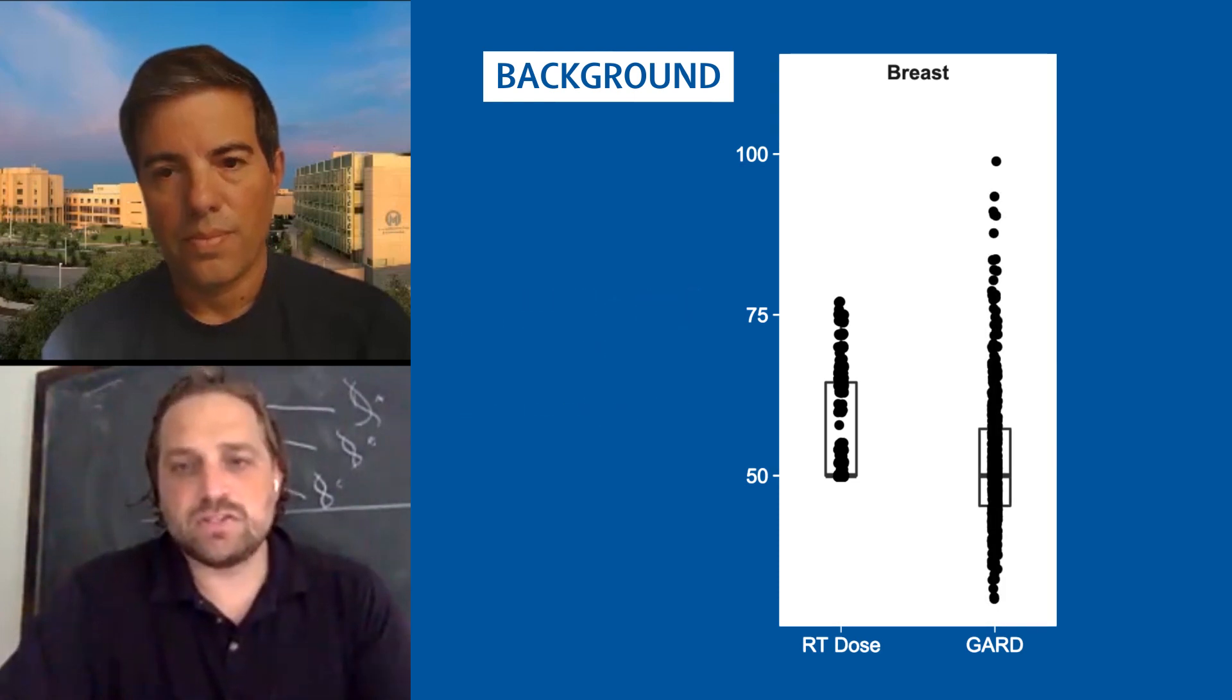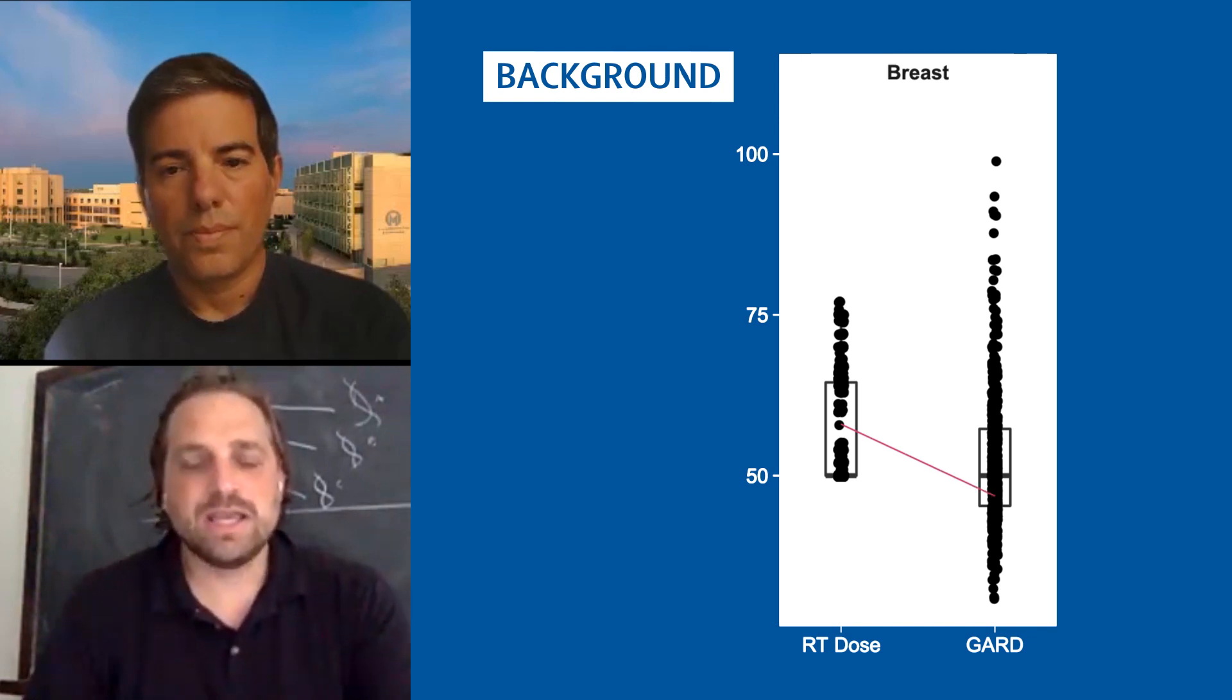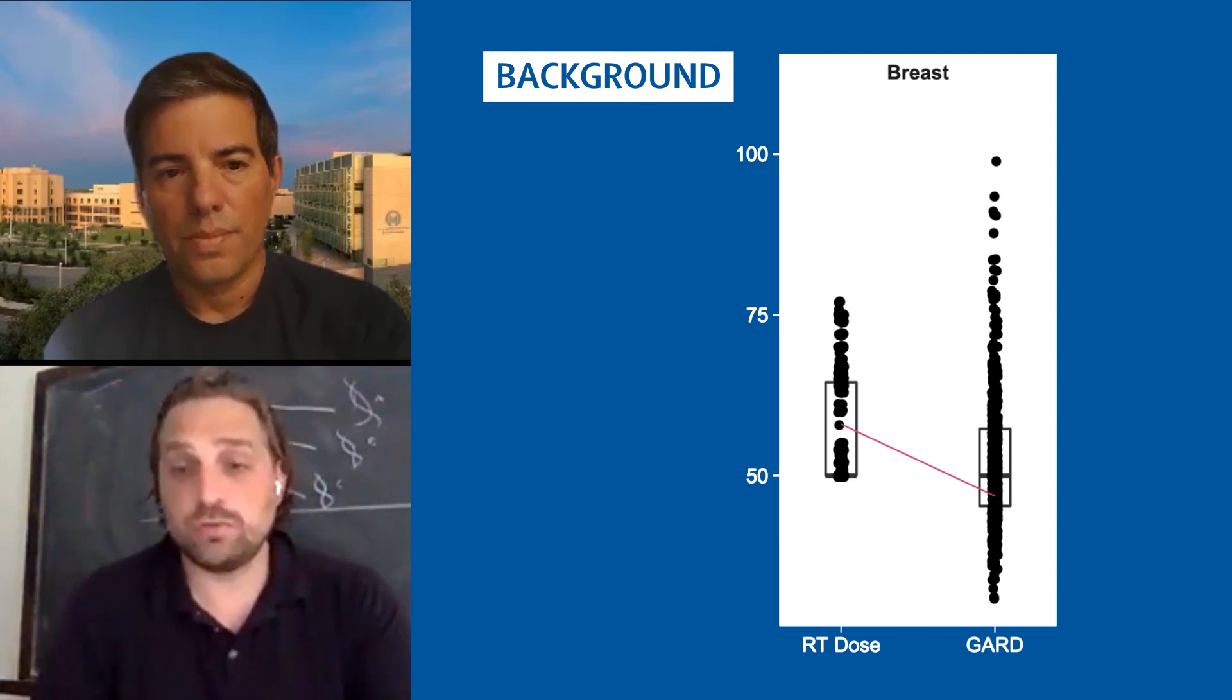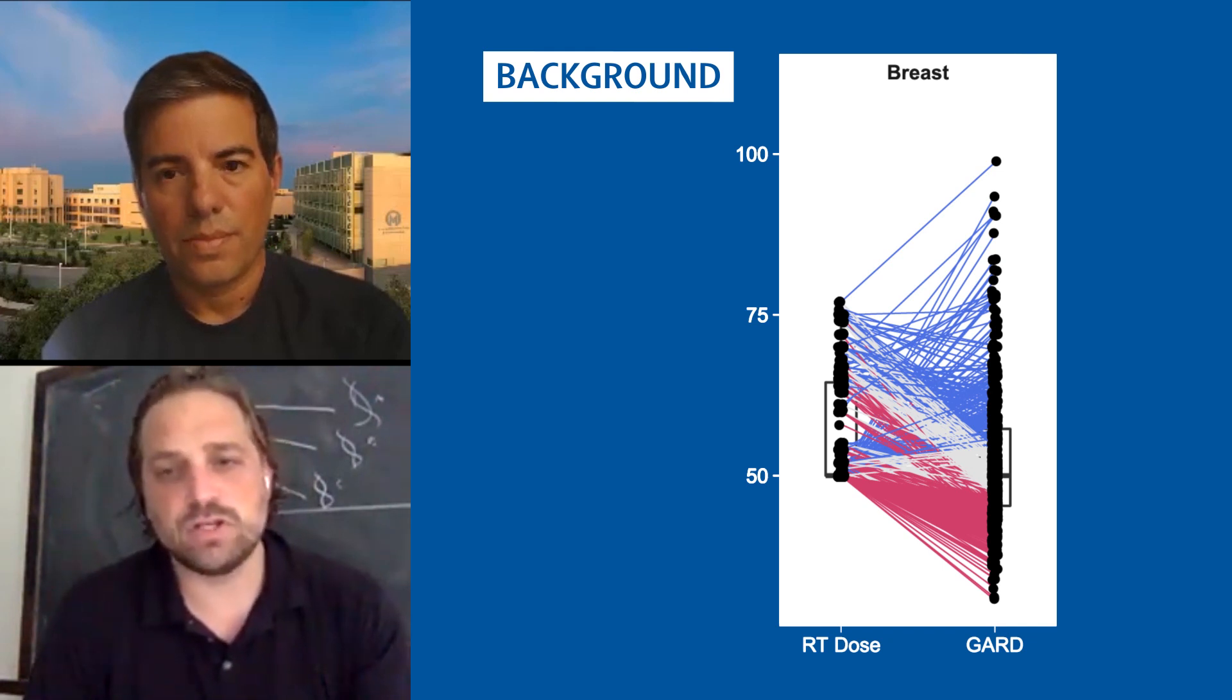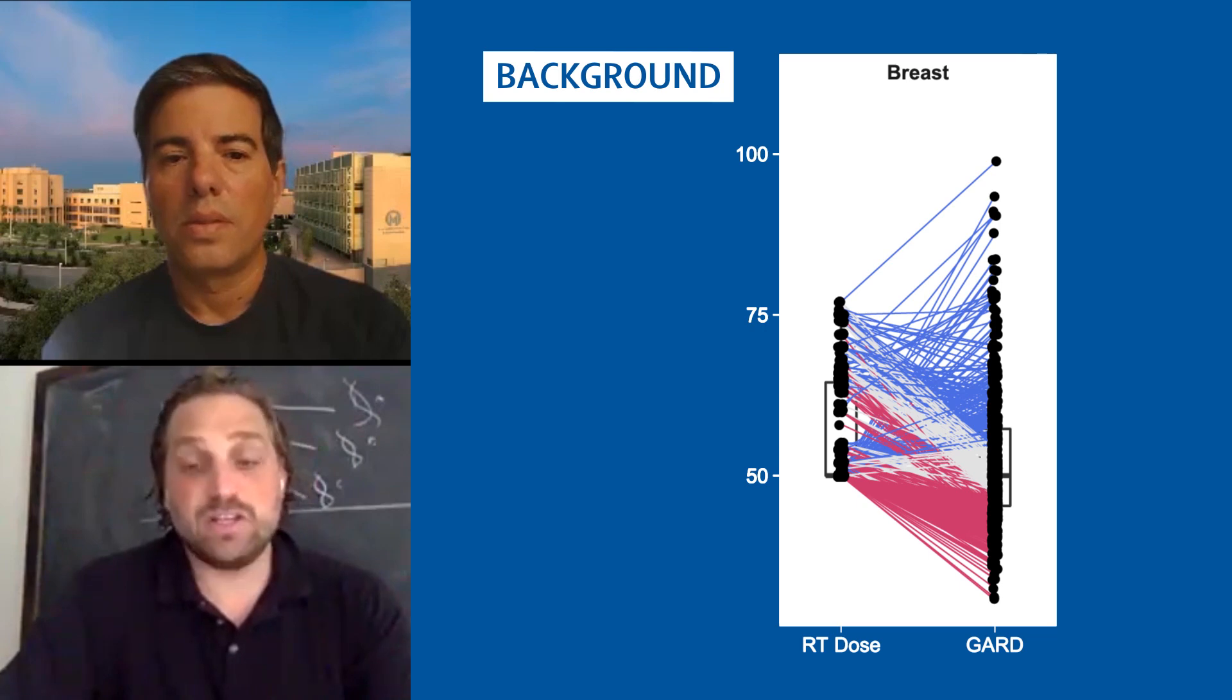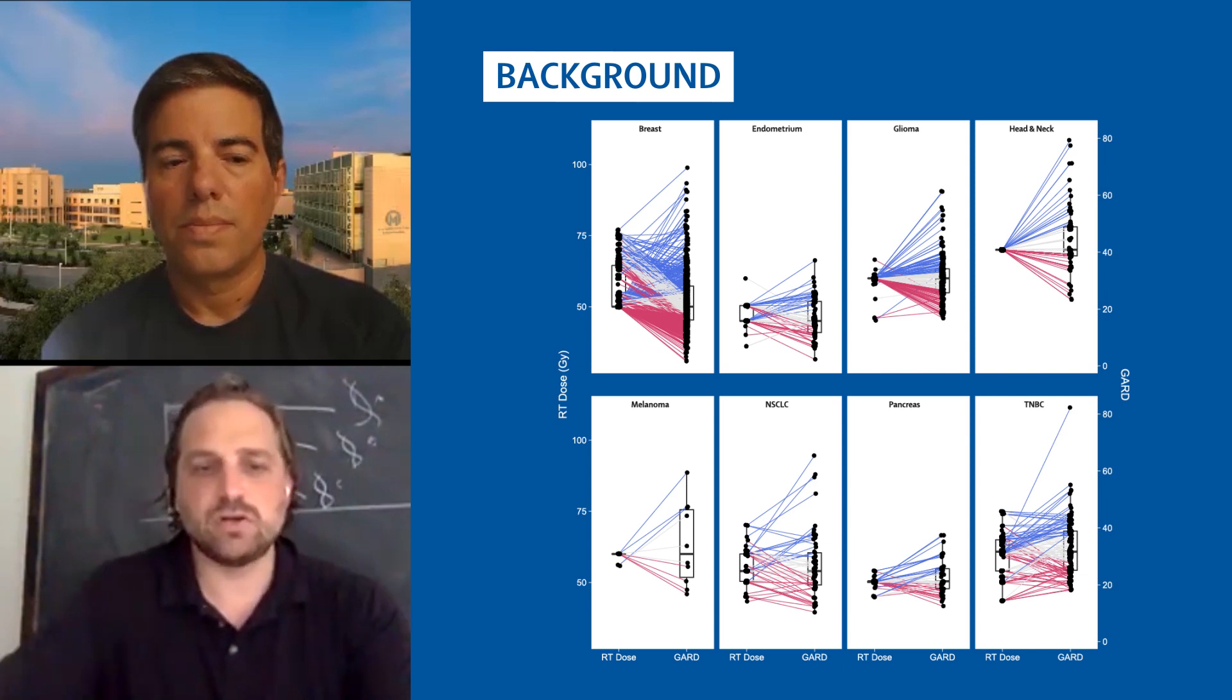In some cases, a very high delivered dose, what comes out of the machine, can actually encode for a very low biological effect. And the same is true the other way around, and all sorts of relationships. And so here is a real plot of a real cohort of patients who received some small range of radiation dose, as you can see on the left. And you can see where it encodes this wide range of GARD on the right. And we actually did this in this paper with a huge cohort of eight different disease sites and cancer types. And you can see there's wide heterogeneity across.